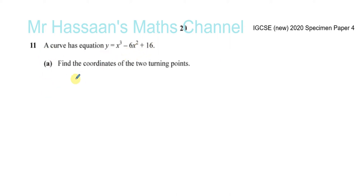So in my playlist, until more questions come up in the future, I have included some questions which are suitable from AS level for this particular topic of calculus differentiation. Question number 11 states: a curve has equation y equals x cubed minus 6x squared plus 16, and we are asked to find the coordinates of the two turning points on this curve.